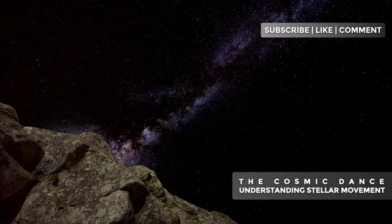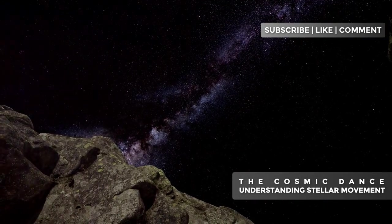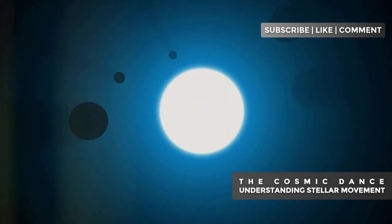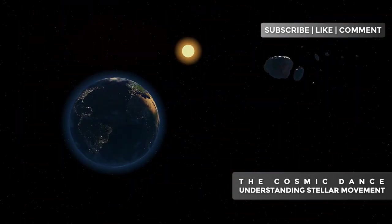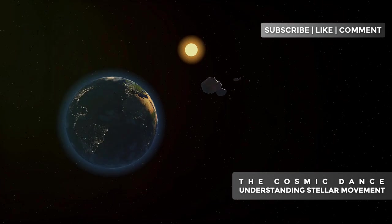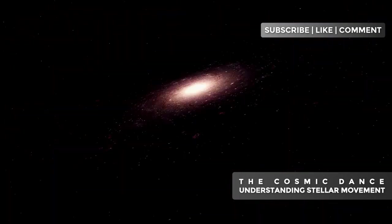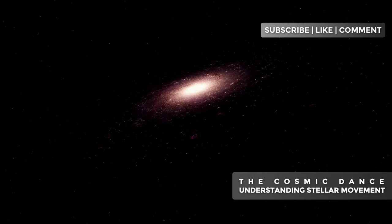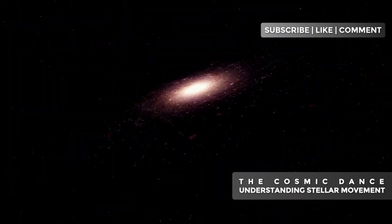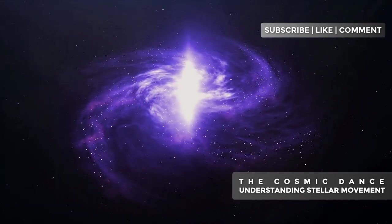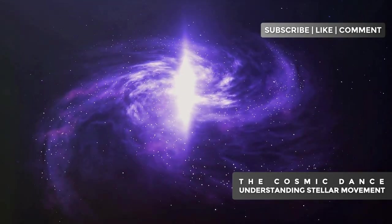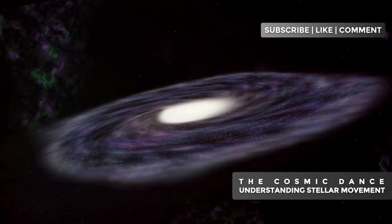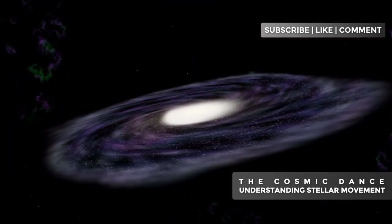The Milky Way's rotation curve holds one of the greatest mysteries of modern astronomy. According to Kepler's laws, which describe the movement of celestial bodies, we would expect stars farther from the galactic center to move more slowly. After all, that's how it works in our solar system. Mercury orbits the sun much faster than Neptune. However, observations show that stars in the outer regions of the galaxy move much faster than predicted. Instead of decreasing with distance from the center, the speed of stars remains relatively constant or even increases slightly in the outer regions of the galaxy. This phenomenon is known as the flat rotation curve problem.